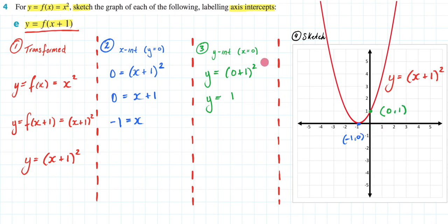So we have found our y-intercept, we have found our x-intercept, and we have found our newly transformed rule and given it a sketch. Hopefully this was helpful in answering question 4e of exercise 7a.